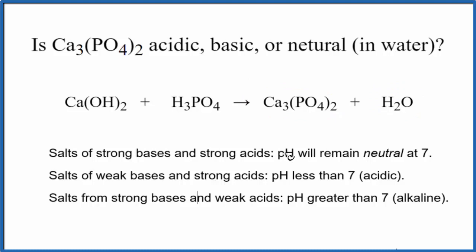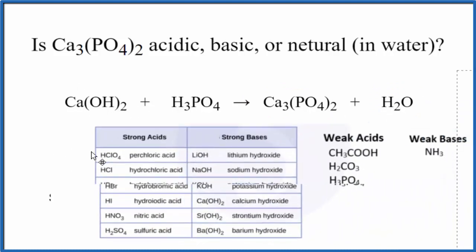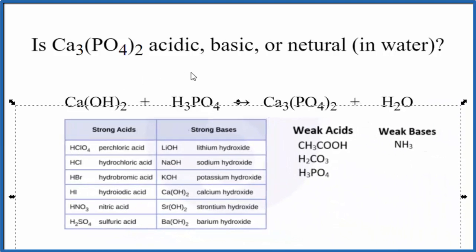So to use the rules, we need to know the strength of the base and the acid. This table here is really helpful, probably one you want to memorize. We have strong bases and strong acids. So here's our base, we're looking for calcium hydroxide right there. That's a strong base.